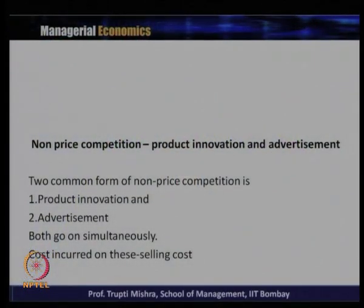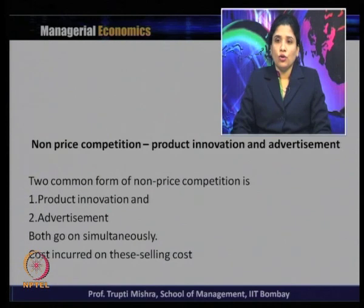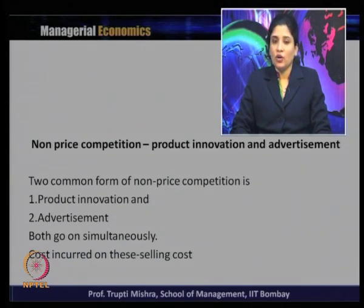In monopolistic market structure there is evidence of non-price competition, and two common forms of non-price competition are product innovation and advertisement. Both go on simultaneously — if innovation takes place there is also a need for advertisement, and both involve costs. That cost is known as the selling cost; for advertisement it is selling cost, and for product innovation the R&D cost also comes as part of the selling cost.